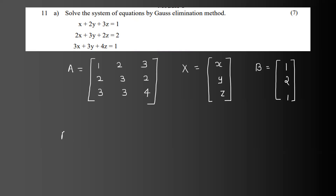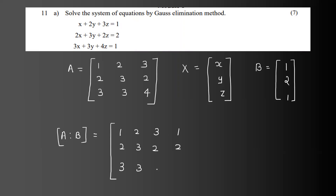This is the next step — A and B combined into the augmented matrix. The matrix [A|B] equals 1, 2, 3, 1. The next row values are 2, 3, 2, 2, 3, 3, 4, 1.